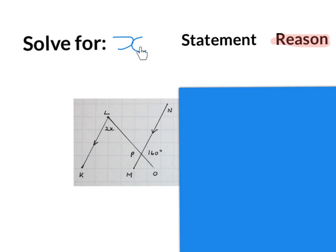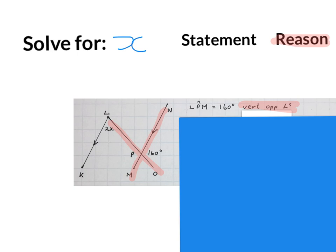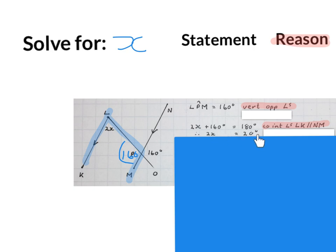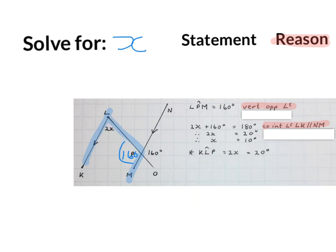In the next problem they say solve for X. One way is to say angle LPM equals 160 degrees, vertically opposite angles. Then write 2X plus 160 degrees equals 180 degrees, co-interior angles, KL parallel to NM. Because those two lines are parallel they form co-interior angles adding up to 180. Minus 160 on both sides gives 2X equals 20 degrees, so X equals 10 degrees. Please remember that is not the size of that angle — it is the value of X. If you needed the size of angle KLP it would be 2X which is 20 degrees, but they didn't ask that. Please stop the video and get your brain around how we solved for X.